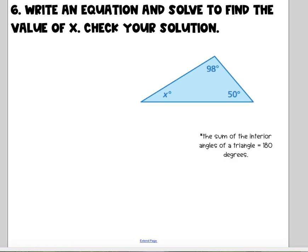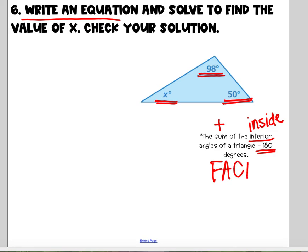Look at this one. Write an equation and solve to find the value of x, check your solution. I have a triangle with three angle measures: x degrees, 98 degrees, and 50 degrees. And it says the sum, addition, of the interior inside angles of a triangle is equal to 180. That means angle 1 plus angle 2 plus angle 3 equals 180. This is an important fact to pay attention to. All triangle angle measures will equal 180 degrees, no matter how big or how small.